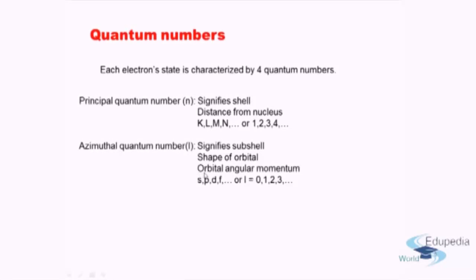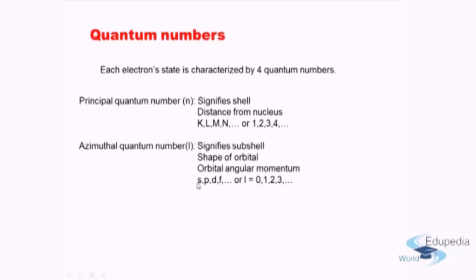The azimuthal quantum number also represents physically the orbital angular momentum of the electrons. It is represented by s, p, d, f — where s is the lowest energy subshell, then p, then d, then f — or by the l numbers 0, 1, 2, 3, and so on. The shape of an s orbital is spherical, whereas p is more of a dumbbell shape. Each specific orbital has a specific shape, which is what the azimuthal quantum number defines.